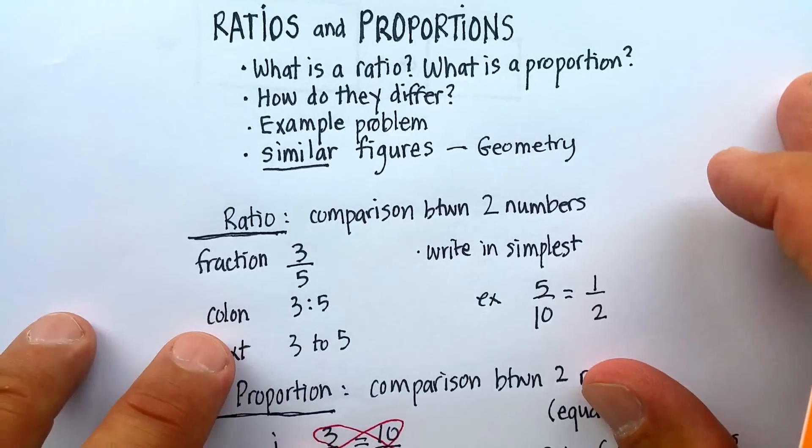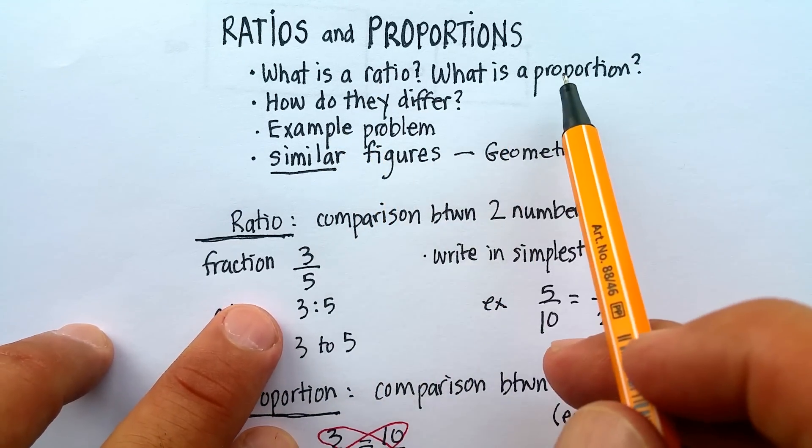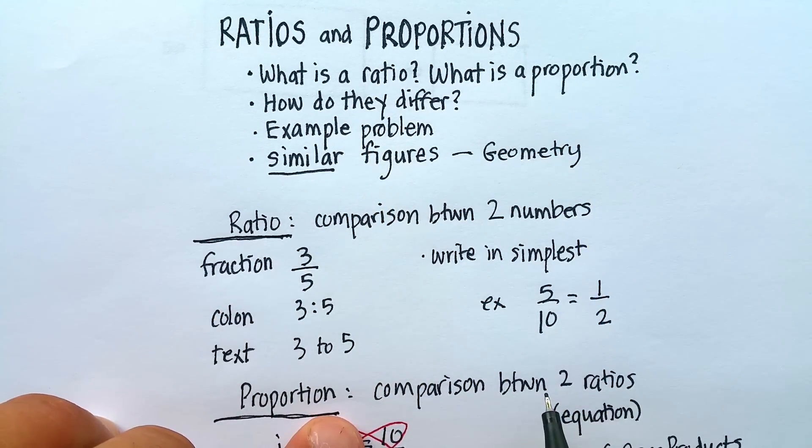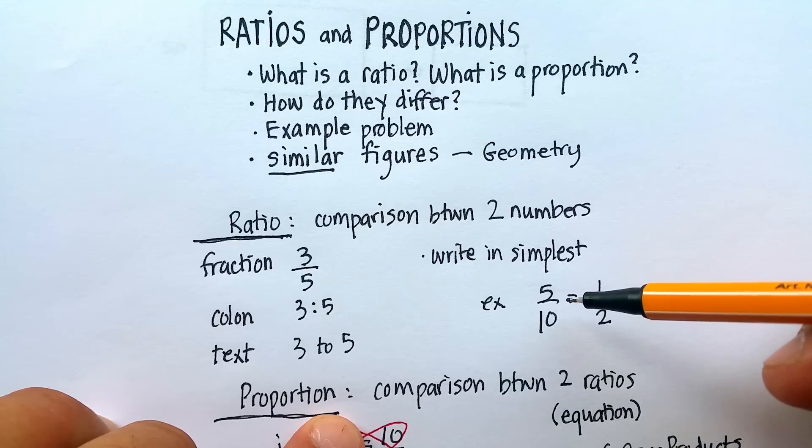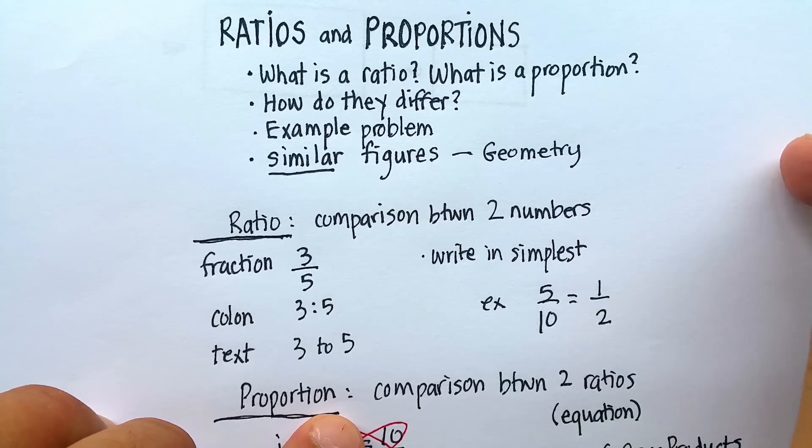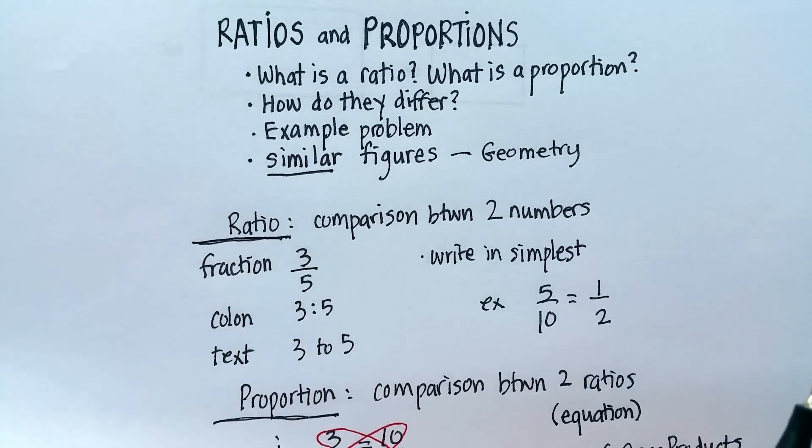So, real quickly, what have we done? We've talked about the difference between a ratio, just comparing two numbers, a proportion, comparing two ratios. And how do they differ? Really, they don't. They're just one is slightly more involved. One is using the other to do it. Let's try an example problem, and let's talk about what similarity means.